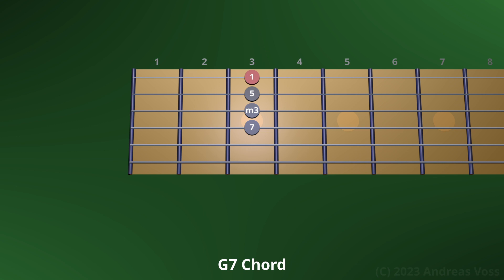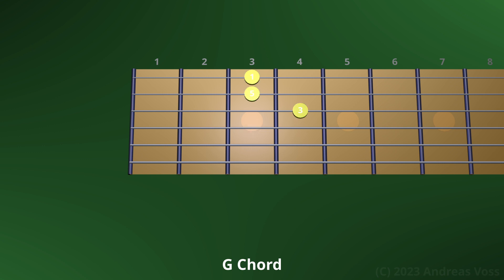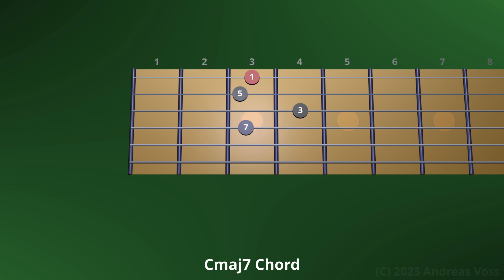Now let's construct the G dominant 7th chord from the minor 7th chord. We do this by raising the minor 3rd to the major 3rd. The short name of the G dominant 7th chord is the G 7th chord — I use the full name to avoid confusion with other 7th chords. The dominant 7th chord is the major triad with the 7th added. Note how the G dominant 7th chord wants to resolve into a C major 7th chord.